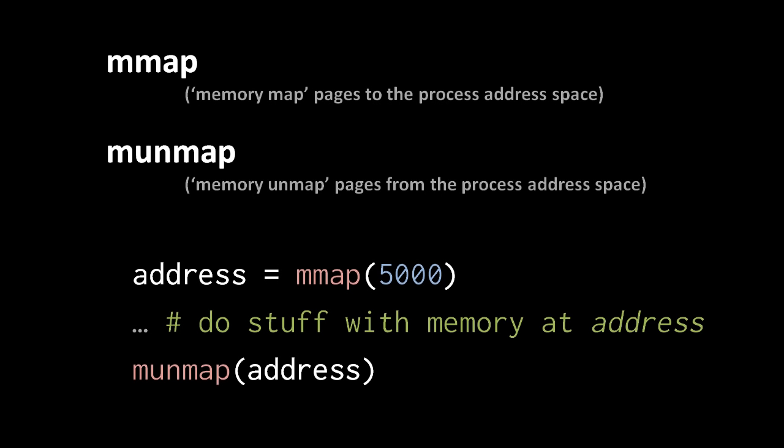What mmap returns is a newly allocated chunk of memory somewhere in your address space with at least the requested number of bytes. Note the 'at least' — memory is allocated in chunks of pages, usually around 4 kilobytes in size. So if you allocate 5,000 bytes, that probably allocated at least two pages. You requested 5,000 bytes, so you shouldn't assume the operating system is giving you any more than that. Once you're done with that chunk, you remove it from your address space with the mmap system call by passing in the address of the first byte of that previously allocated chunk.